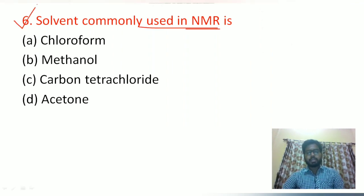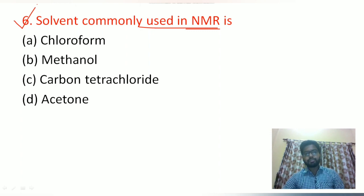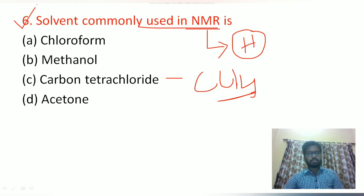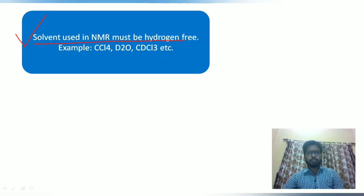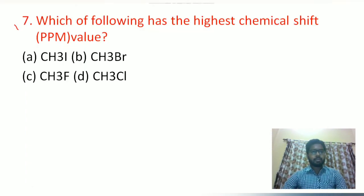The sixth question: which solvent is commonly used for NMR spectroscopy? Options are: chloroform, methanol, carbon tetrachloride, or acetone. The solvent used in NMR spectroscopy should not have any hydrogen atoms. Carbon tetrachloride (CCl4) has no hydrogen atom in its structure, so it is the answer. Other solvents used include D2O and CDCl3.